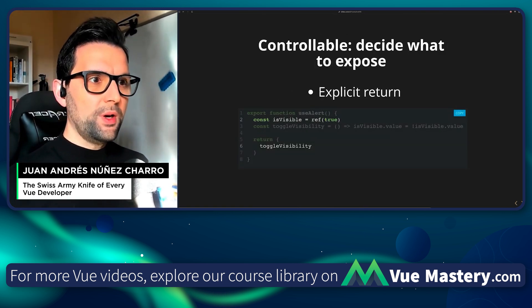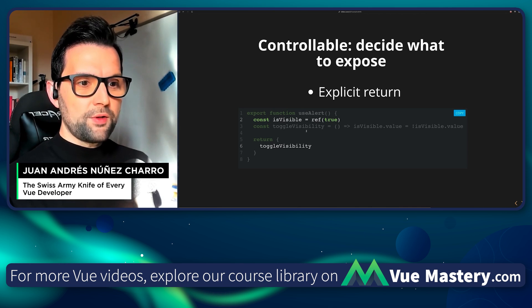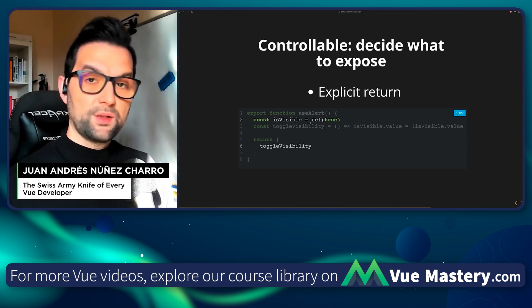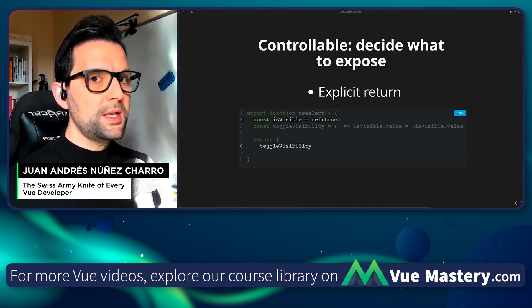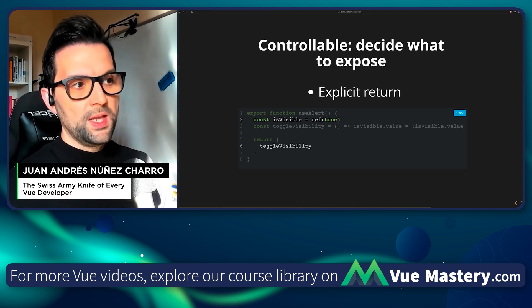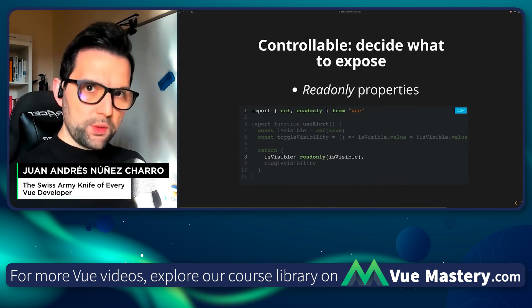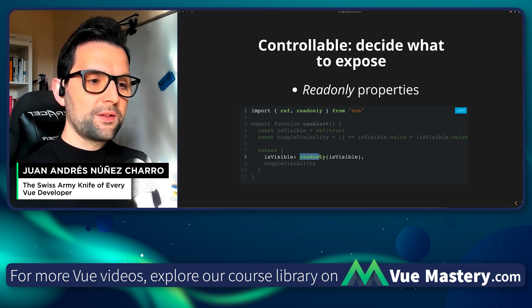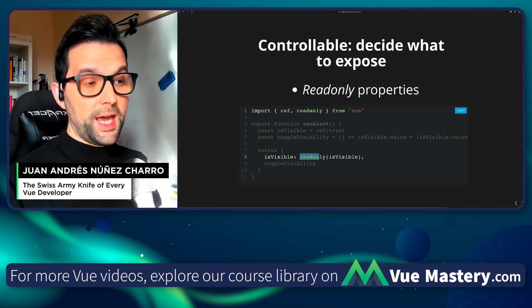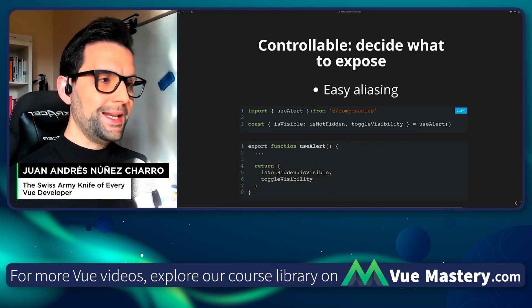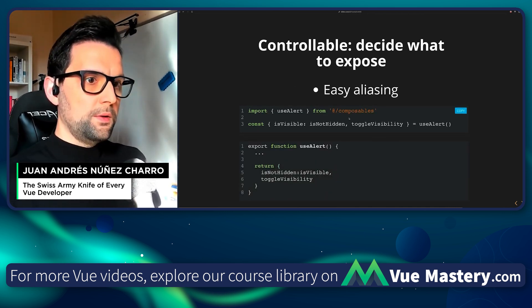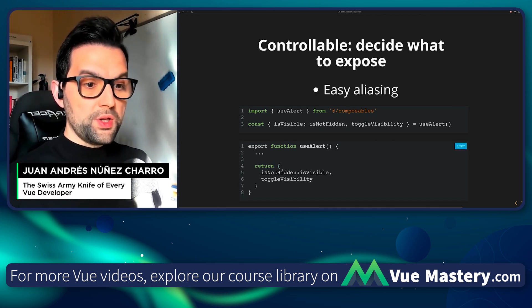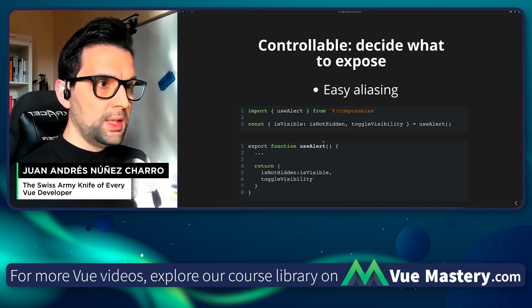Third — controllable. You decide what to expose. We saw this in the beginning because you can return whatever you need. So you can keep some parts of the composable private and expose only what you need to consume outside. But you can do more. If you have to expose a piece of state, a computed property, or a reactive object, you can make it read-only with the readonly API from Vue. And easier aliasing — since this is JavaScript, you can change the name or alias when importing or when exposing. Super easy, but super powerful at the same time.